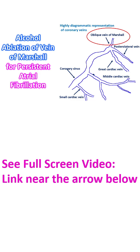Though pulmonary vein isolation is effective in the treatment of paroxysmal atrial fibrillation, its role in persistent atrial fibrillation is suboptimal. A common form of ablation failure is recurrent perimitral flutter. Vein of Marshall is in the reentrant circuit of perimitral flutter, and Vein of Marshall ablation can abolish perimitral flutter.